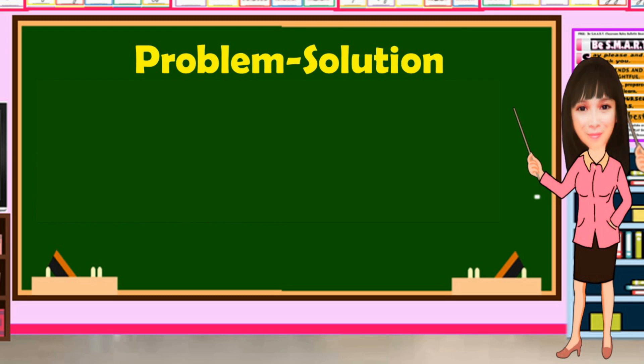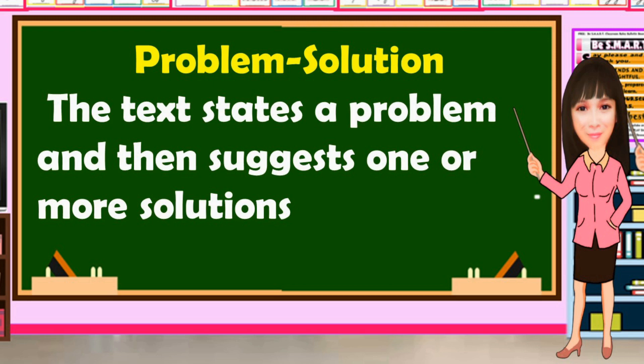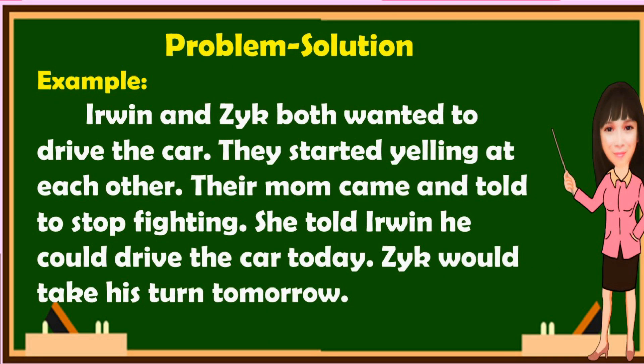Let us first discuss problem-solution. What is a problem-solution text? The text states a problem and then suggests one or more solutions. Here is an example: Irwin and Zike both wanted to drive the car. They started yelling at each other. Their mom came and told them to stop fighting. She told Irwin he could drive the car today. Zike would take his turn tomorrow. In this paragraph, it states that there is a problem and there is also a solution.